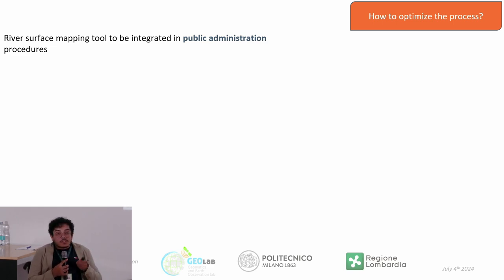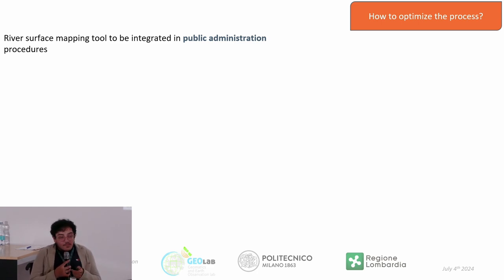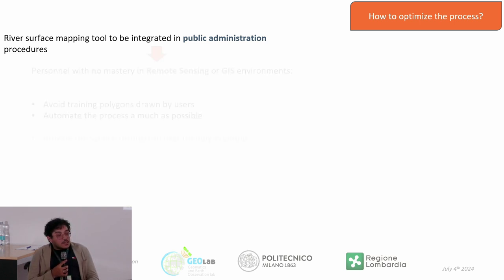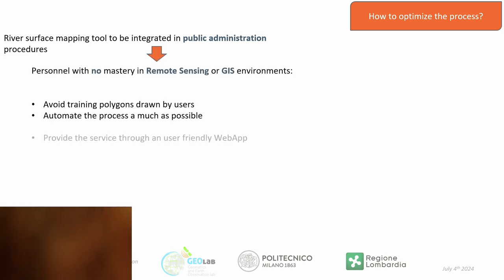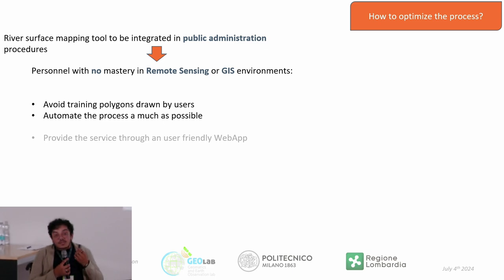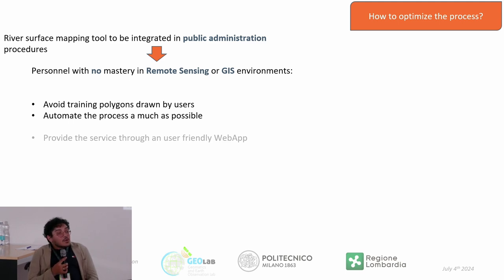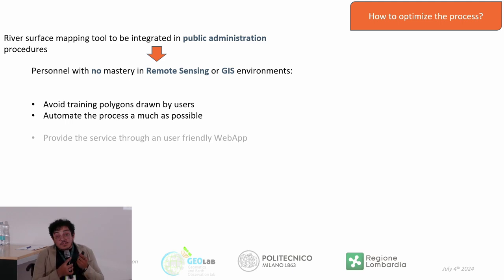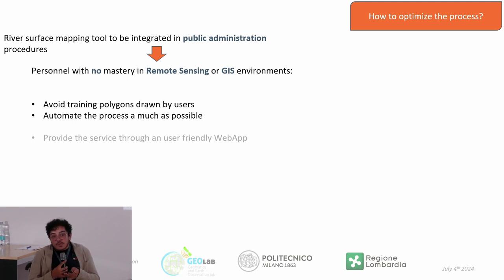This tool was meant to support public authorities, managers, and all stakeholders. Public administration is a very complex environment where we cannot expect to have only remote sensing or GIS experts. So, to produce a truly useful tool that can be used by almost everyone, we need to avoid requiring users to manually draw training samples by photo interpretation of the imagery. All possibilities were considered for automating the process as much as possible.